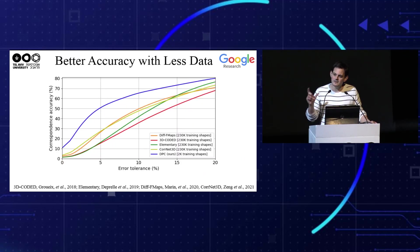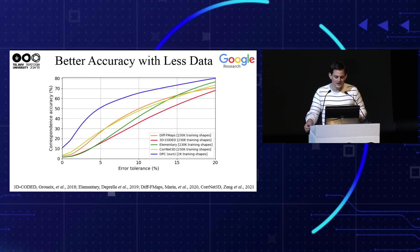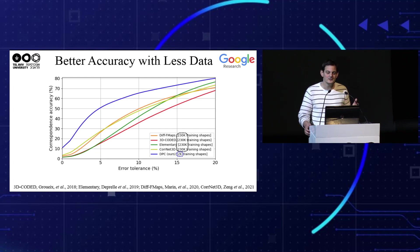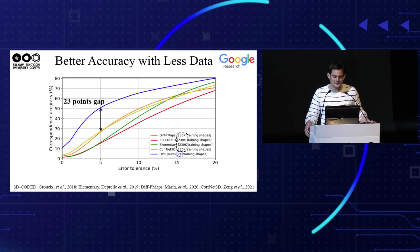Focusing on learning only the point feature representation results in a win-win situation — it gives better correspondence accuracy with much less training data. This graph depicts the correspondence accuracy versus the error tolerance for the SHREC19 dataset of human shapes. Previous methods used an entire training dataset of 230,000 training shapes, while our method used a fraction of only 1% — just 2,000 shapes — while achieving better correspondence accuracy across all the tolerance range. For example, at 5% tolerance, it achieves an improvement of 23 points in accuracy.